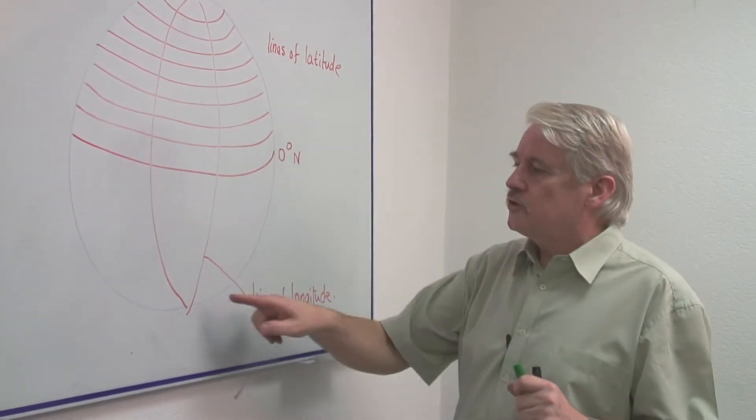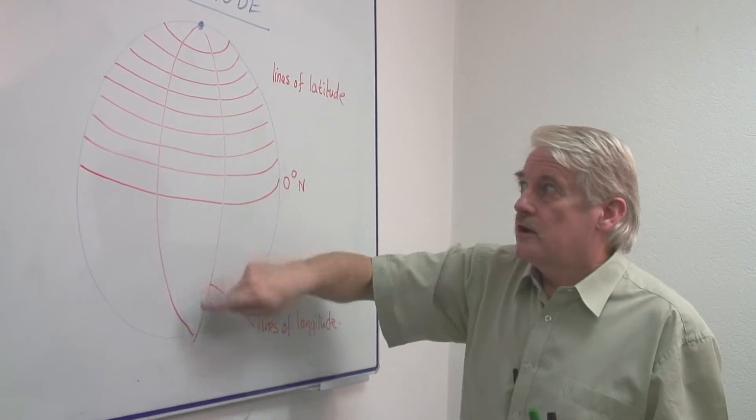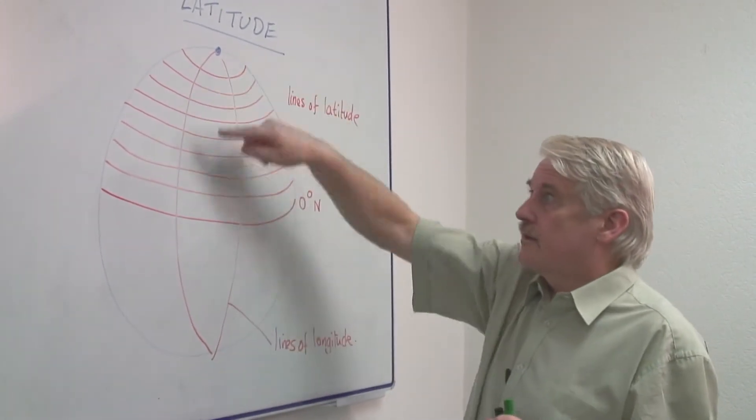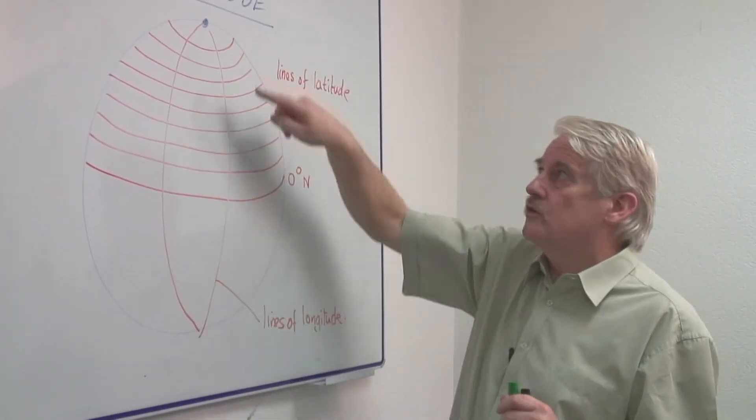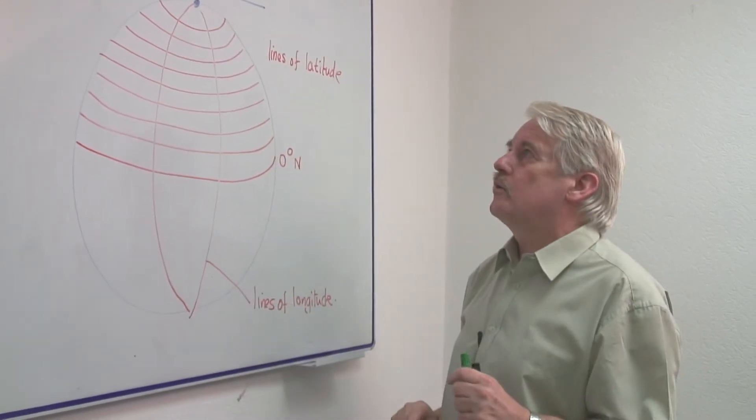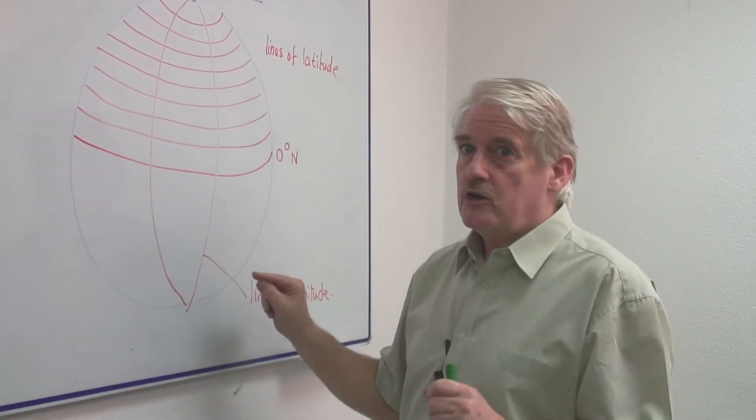The lines of longitude are always great circles. That is they always find the largest circle through the north and south poles. Geographic poles, not magnetic poles.